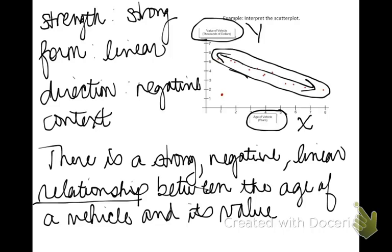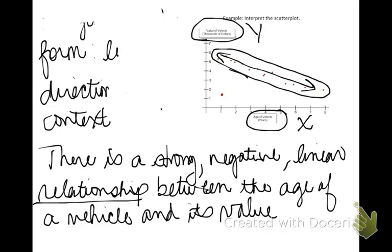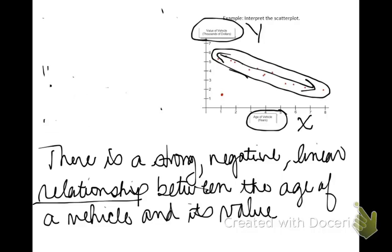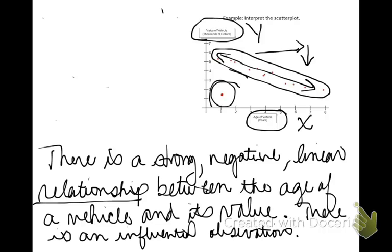Now, the fifth item to check for: outliers, influential observations, and clustering. There is a value that didn't quite follow the overall trend. For most points, as x gets bigger, y gets smaller. But for this particular point, as x was small, y was also small — it goes against the overall trend. That makes this an influential observation. Ideally, we would say: a vehicle that was not very old sold for an unusually low price.